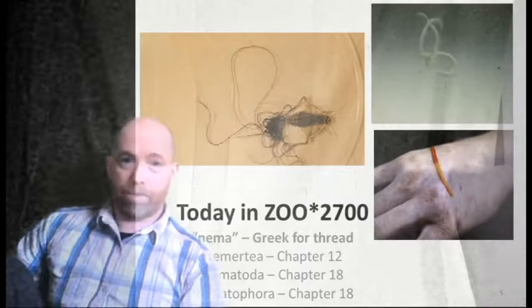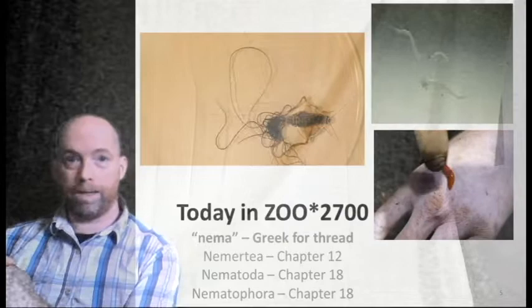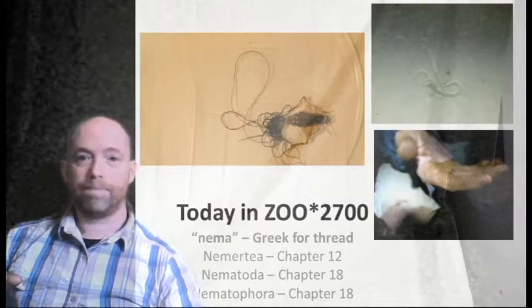Welcome to this lecture where we'll talk about all things thread-like — the Greek root 'nema' meaning thread. We'll cover three different groups: the nemerteans, which are spiralians and close relatives to the mollusks, and then two much more closely related groups, the nematodes and the nematomorphs, which are ecdysozoans.